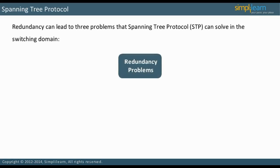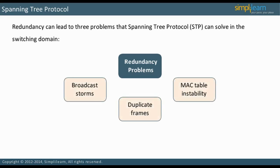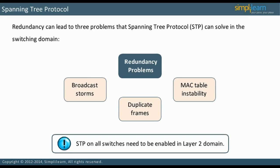Redundancy can lead to three problems that Spanning Tree Protocol (STP) can solve in the switching domain: broadcast storms, duplicate frames, and MAC table instability. This is because loops form when there are redundant links and redundant paths. Spanning tree is enabled by default for all VLANs. Always enable STP on all switches in the layer 2 domain.